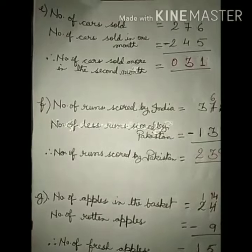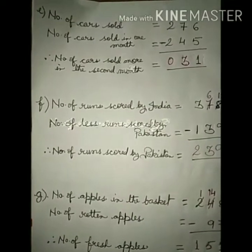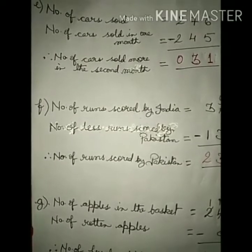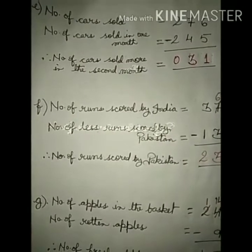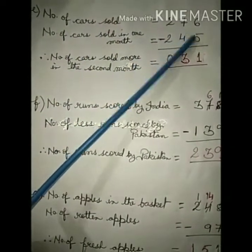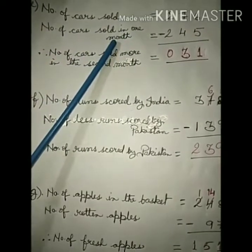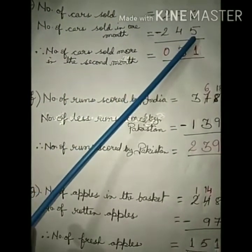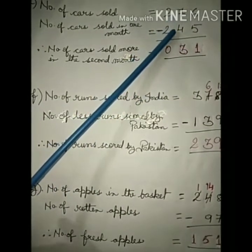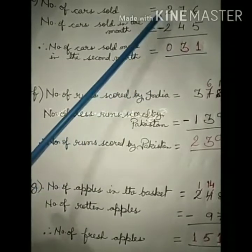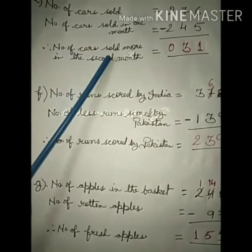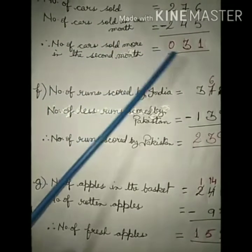E: A company sold 245 cars in one month and 276 cars in the next month. How many more cars did the company sell in the second month? Answer: Number of cars sold: 276. Number of cars sold in one month: 245. Now subtract: 6 minus 5 is equal to 1, 7 minus 4 is 3, 2 minus 2 is 0. Therefore, number of cars sold more in the second month is 31.